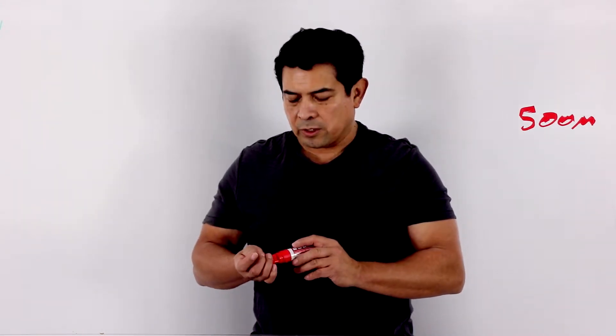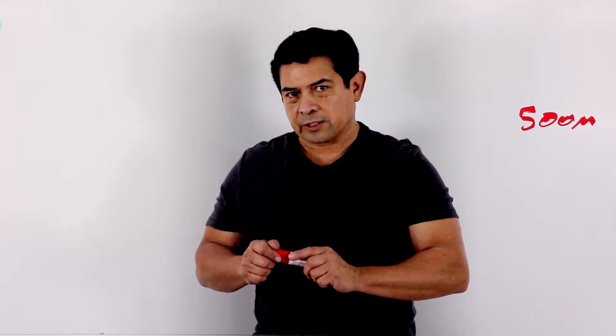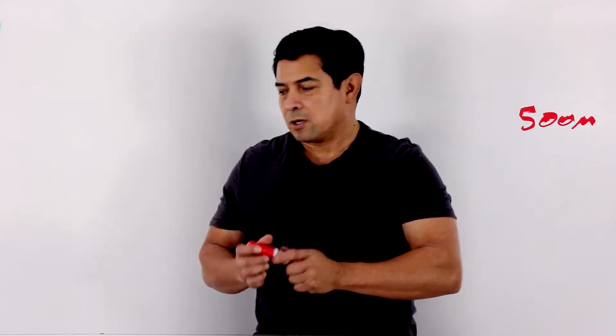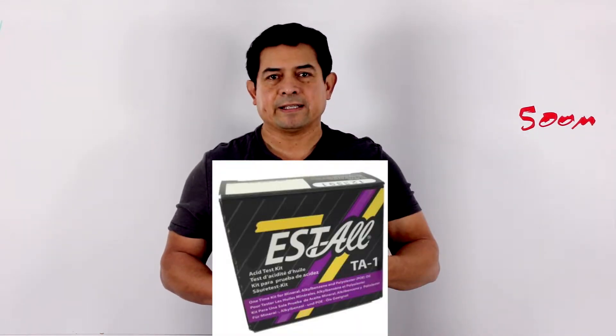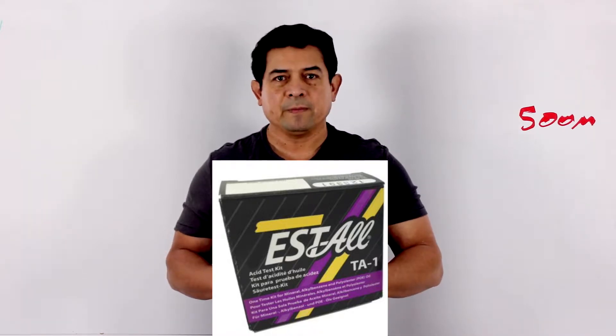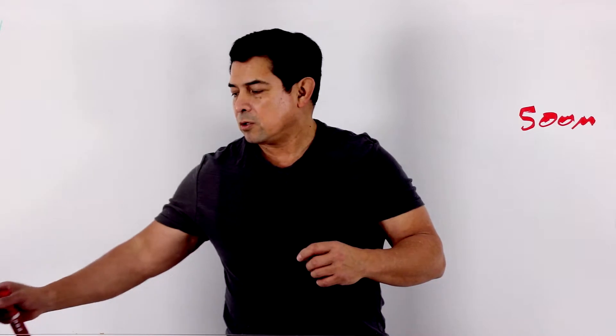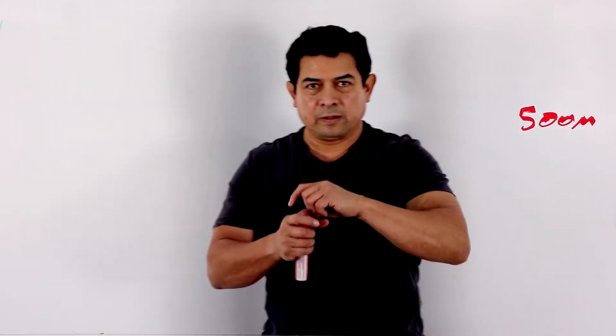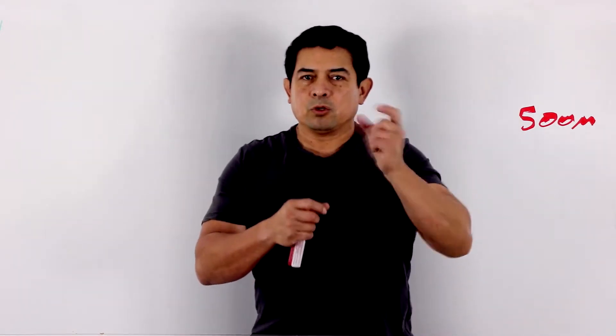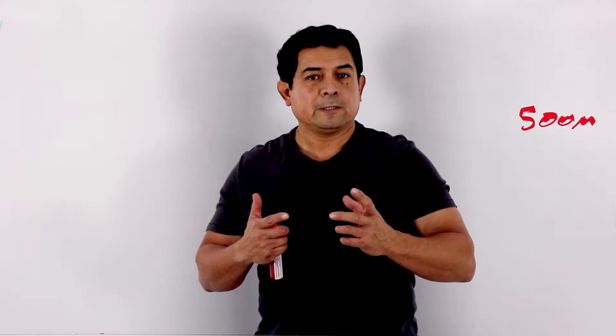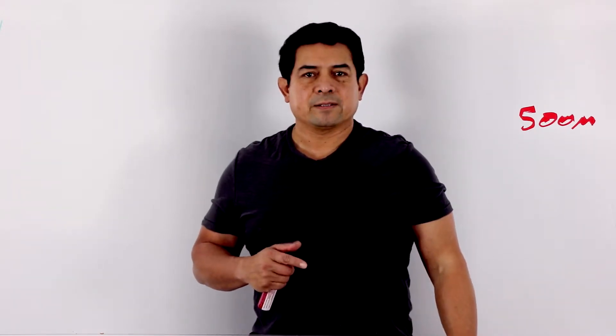But how do you know that you need to flush the lines out? That's another question. Well, one of the things you might want to do is you may want to test the system. You might want to do an acid test. They have different types. This is just one of them. But what you do is you take a little bit of oil, you mix it with, in this little bottle, and you shake it. If they change its color, then yes, you have acid in the system.